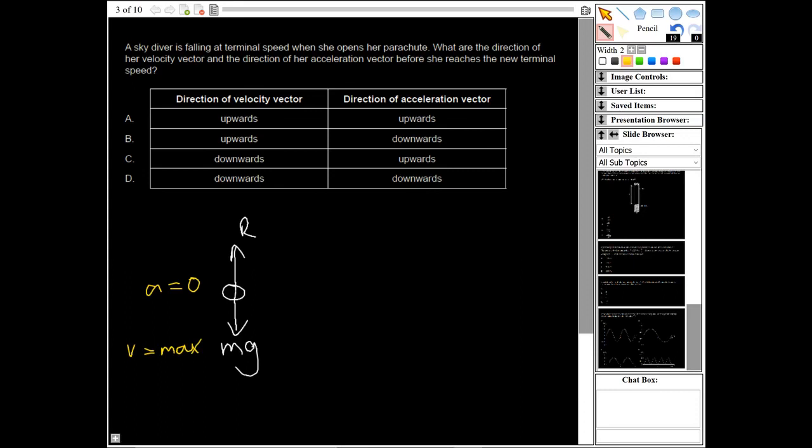Okay, that's the terminal velocity. Now when she opens her parachute, what direction of her velocity vector and the direction of acceleration vector before she reaches the new terminal velocity? So as she opens a parachute, her weight is still going to be exactly the same as it was before.